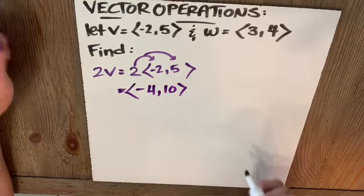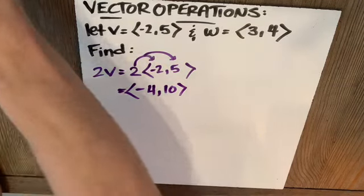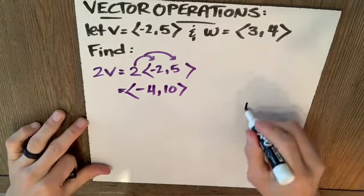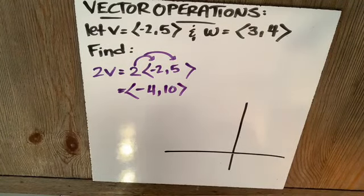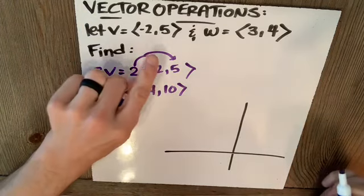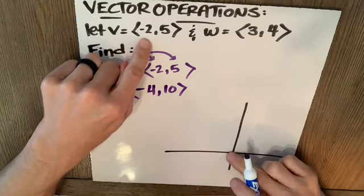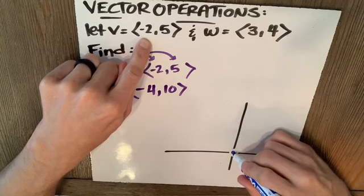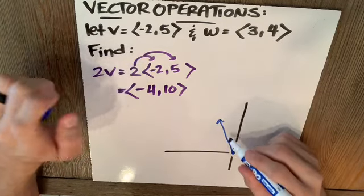What does that look like graphically? Here is my first vector V. I know that vector V says go left 2 and up 5. So if I put it in standard position, it's going to look like this. Here is vector V.